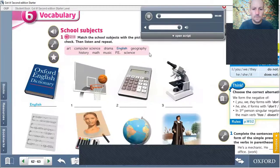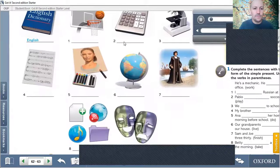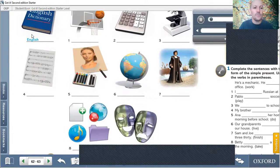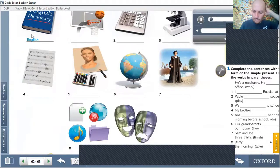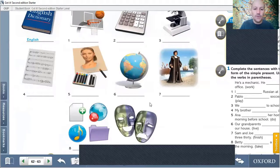Unit six, vocabulary, school subjects, page 62, exercise one. Example, English, one PE, two math, three science, four music, five art, six geography, seven history, eight computer science, nine drama. Unit six. Okay, that was the audio for the school subject. So you write down your school subject in the correct number.